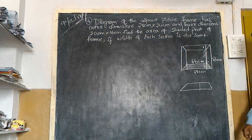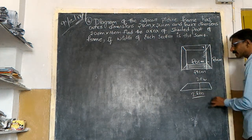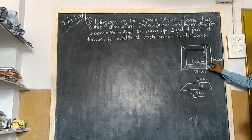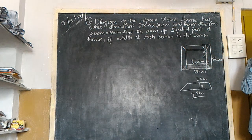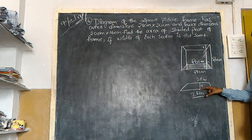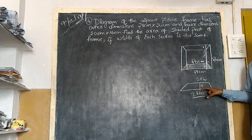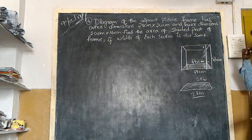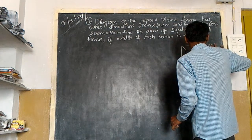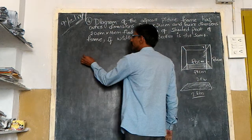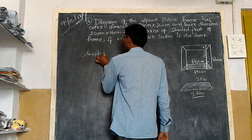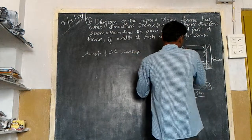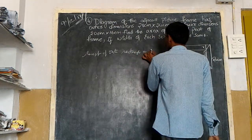This is the trapezium. This we know is twenty centimeters and this we know is twenty-eight centimeters. We don't know the width. If this is x, then x plus x plus sixteen gives us twenty-four centimeters. The outer length of the rectangle is twenty-four centimeters.